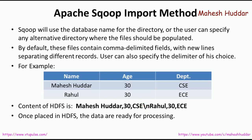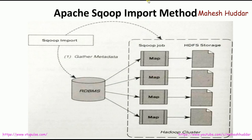Once the data is placed in HDFS, it is ready for processing. The pictorial representation of Apache Sqoop import is shown in this diagram. There are two steps: first, gathering metadata information from the RDBMS — database name, table name, size of the database, and so on. Once that is done, a map-only Hadoop job is created and the data is assigned to different mappers so that it will be stored into HDFS storage. Each piece of data is written in the form of a text file, with each record separated by a new line and each field separated by a comma by default.